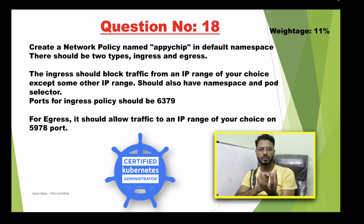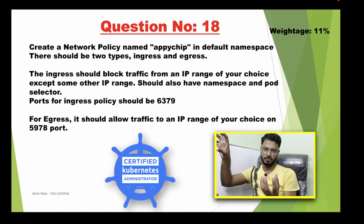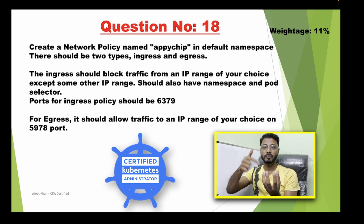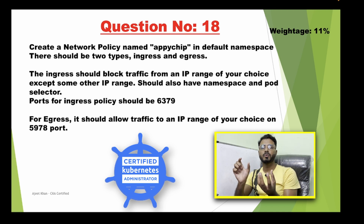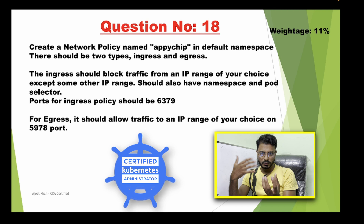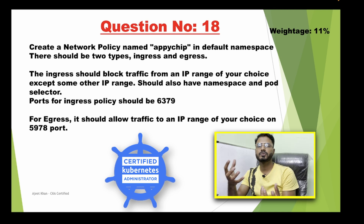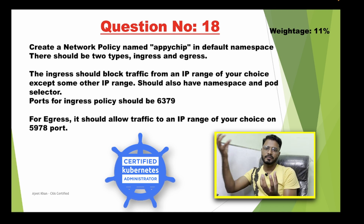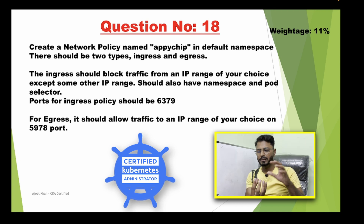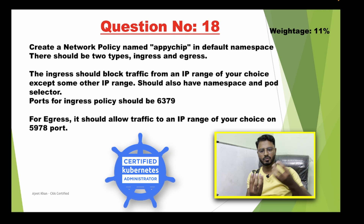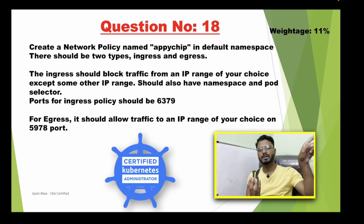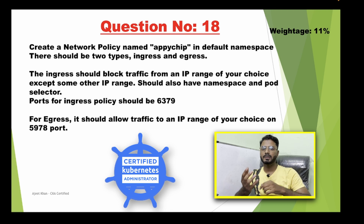Suppose there is a pod and you want to allow traffic to this pod from somewhere — that is ingress, and 'from' is the keyword here used in the network policy. You are allowing traffic from somewhere. Then from this pod you are allowing traffic to somewhere else — that is egress, and 'to' is the keyword used in that kind of policy.